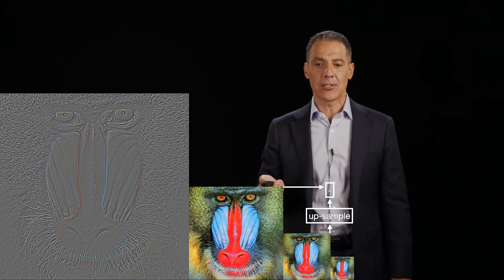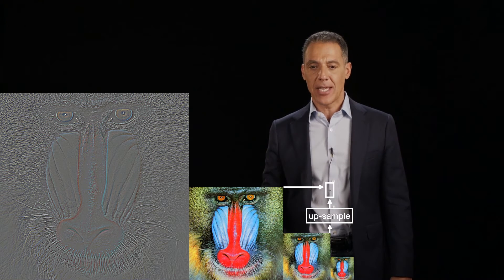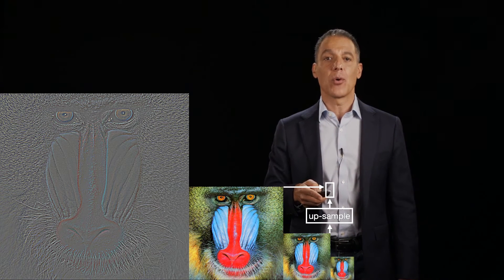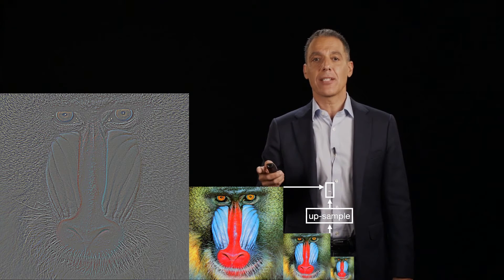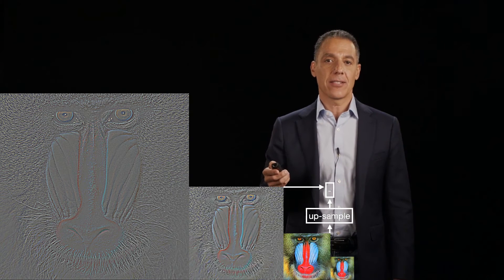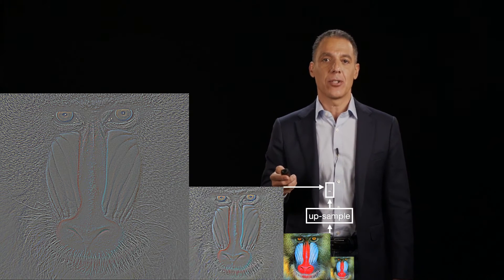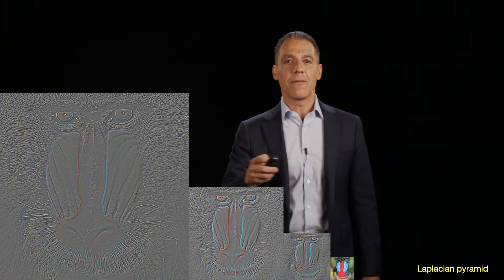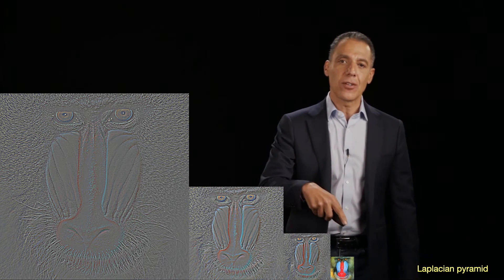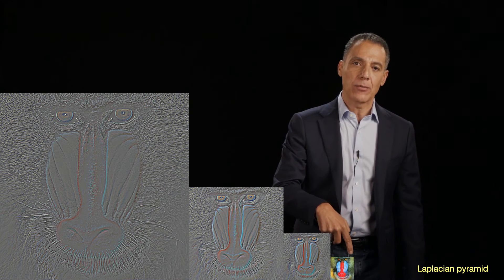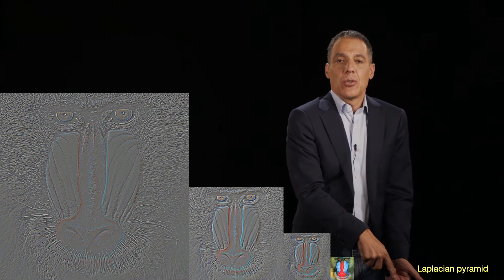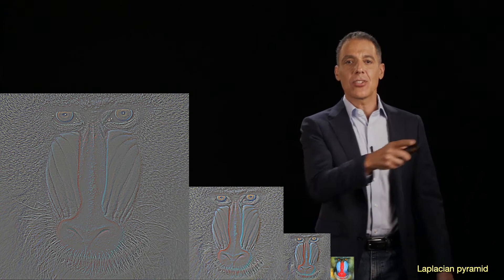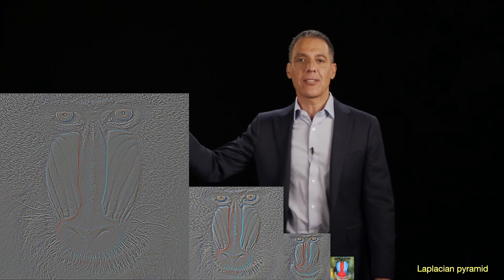Now I'm going to repeat the process. I'm going to take this band, this level here, upsample it, subtract it from the level above, and that's the next level of the pyramid. I'm going to do it again, and then at the very end we leave this little residual because there's nothing to its side to upsample. This is the so-called Laplacian pyramid.